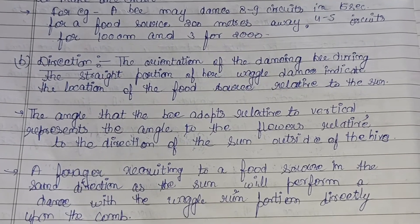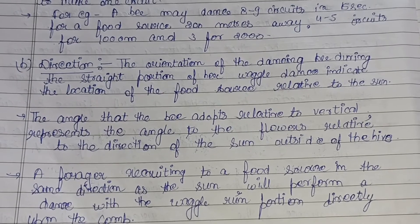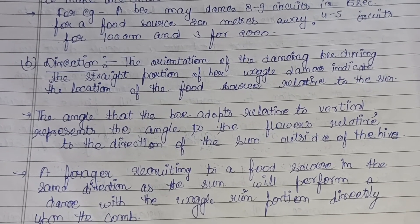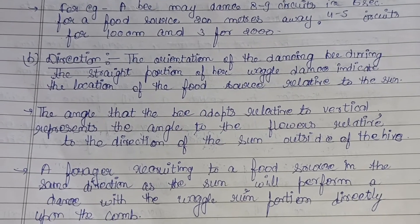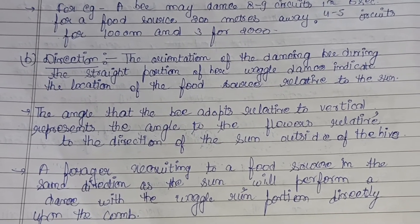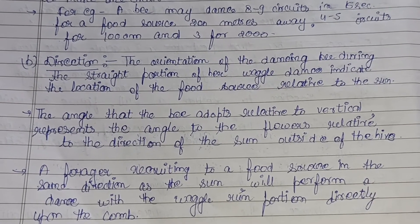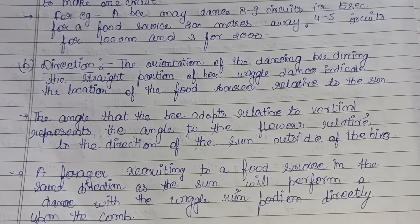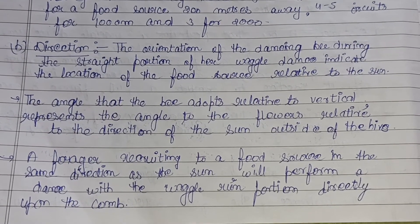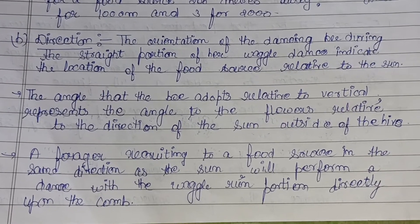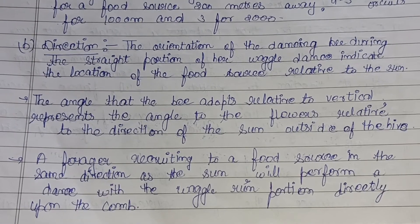For direction: the orientation of the dancing bee during the straight portion of the waggle dance indicates the location of the food source relative to the sun. The angle the bee adopts relative to the vertical represents the angle to the flowers relative to the direction of the sun outside the hive. A forager recruiting to a food source in the same direction as the sun will perform a dance with the waggle run directed straight up on the comb.